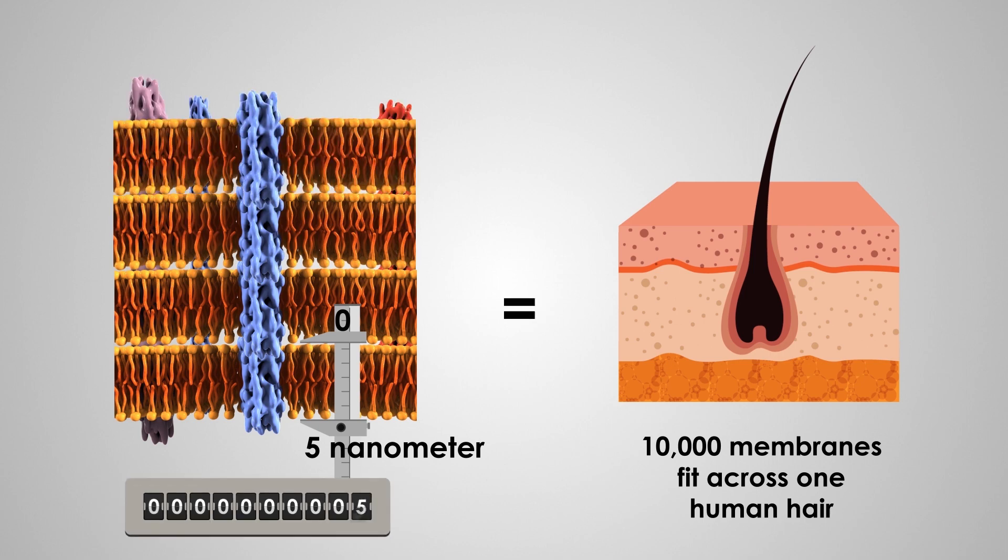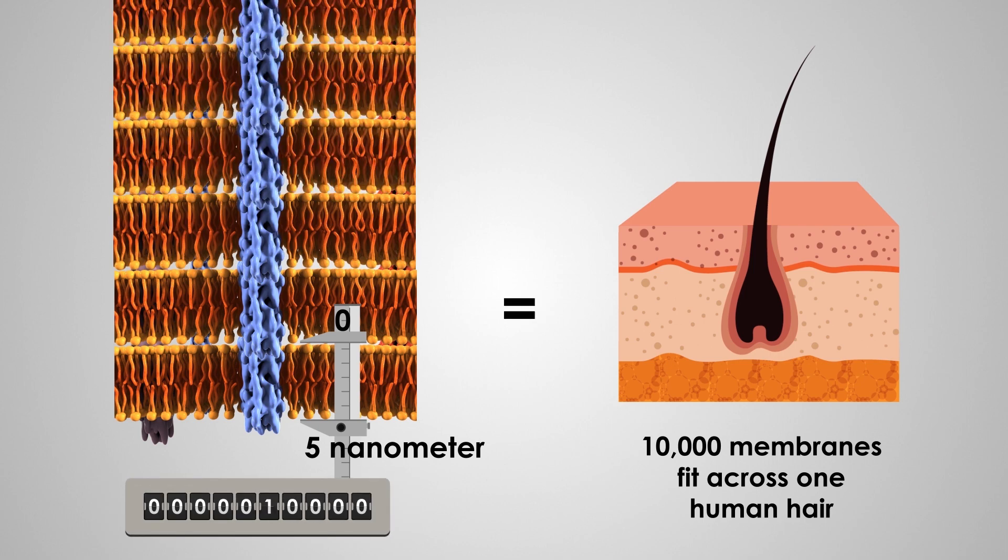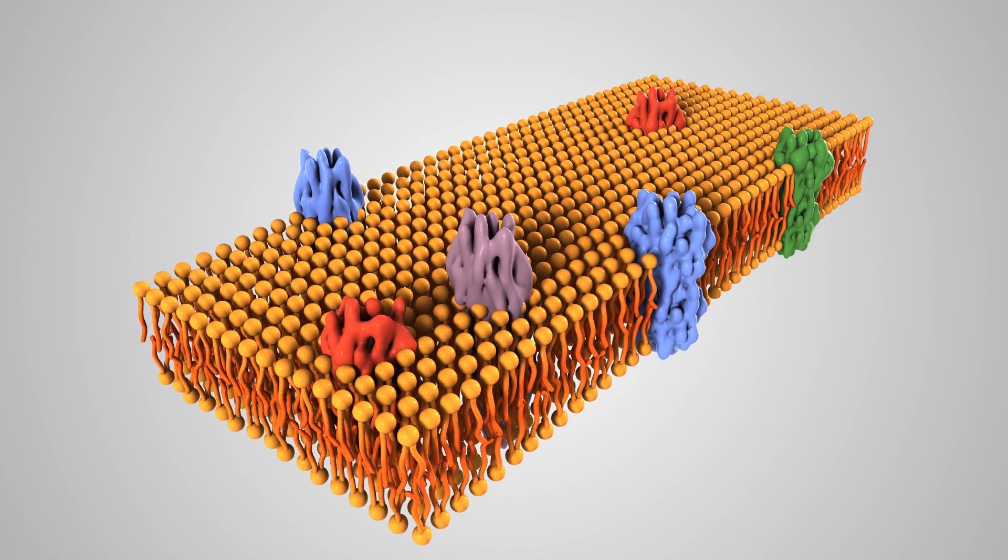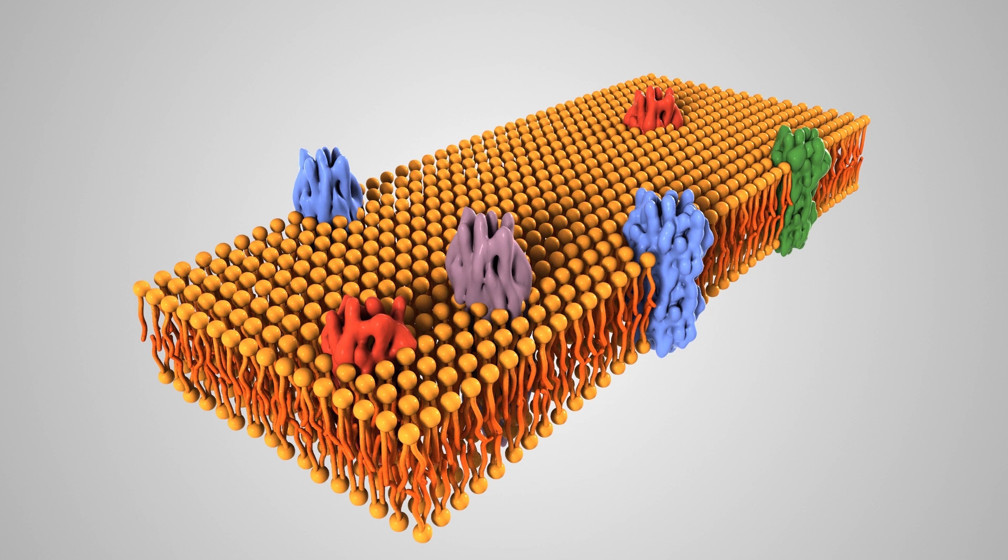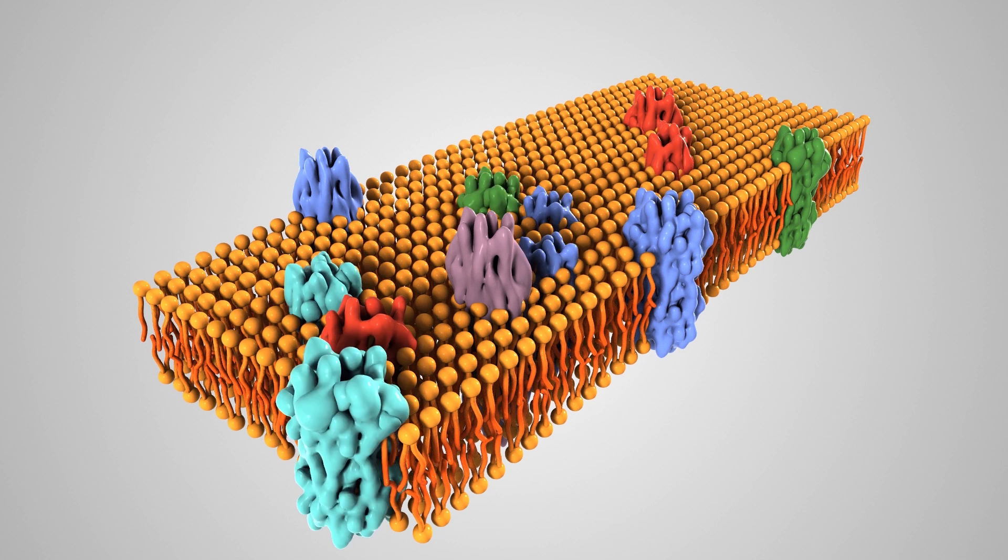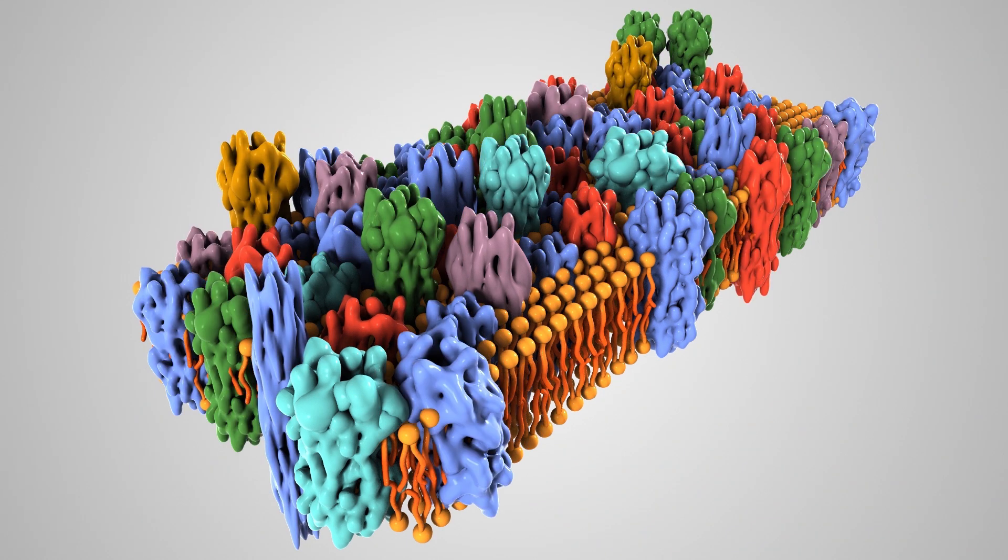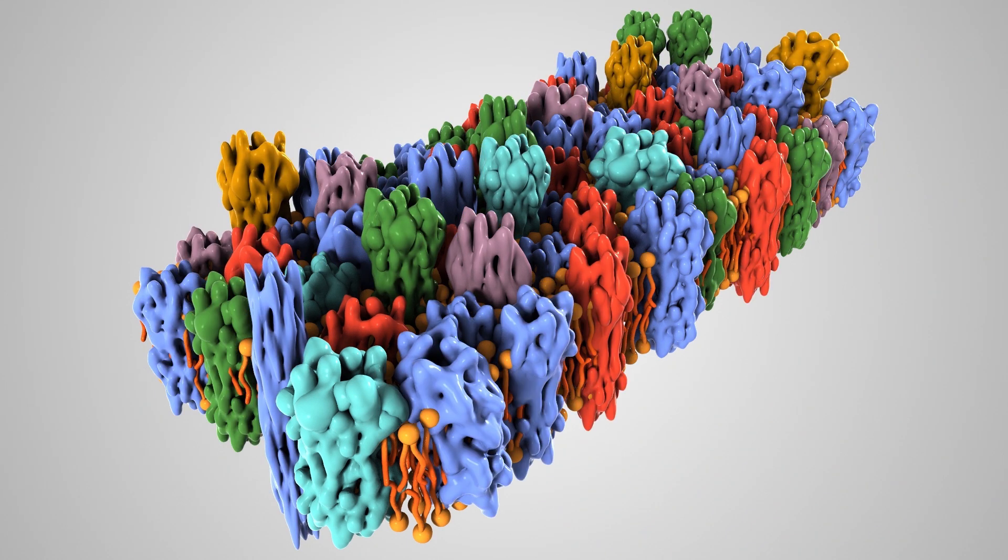Cell membranes are thin, yet amazingly strong. Proteins are embedded within lipid bilayers. However, this view of the cell membrane is incorrect. First, the protein-to-lipid ratio is much higher, with two or three times as much protein to lipid by mass.